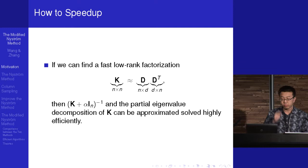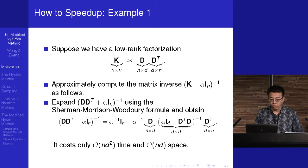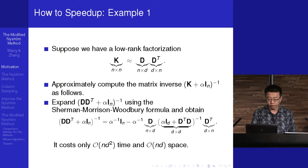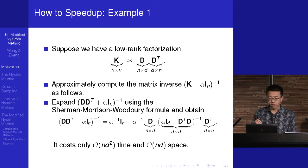Now we consider how to speed up. If we can find a fast low-rank factorization, then the matrix inverse and partial eigenvalue decomposition can be solved quite efficiently. Suppose we have the low-rank factorization. Then we can compute the matrix inverse using the Sherman-Morrison-Woodbury formula. So we don't actually need to compute the full matrix inverse — we need only to compute the inverse of a very small matrix and products of small matrices. The time complexity and space complexity are only linear in N.